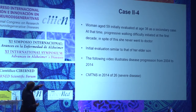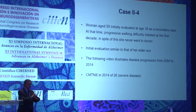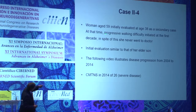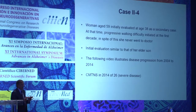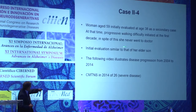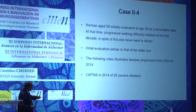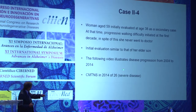The mother is a woman aged 59, initially evaluated at age 38 as a secondary case. She was completely asymptomatic at home and had never gone to a doctor. At that time she recognized walking difficulty initiated in the first decade of life. Despite this, she never sought medical attention. Initial evaluation was similar to that of her son, and the CMT neuropathy score indicates severe disease with a score of 26.